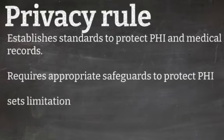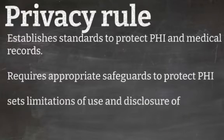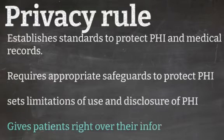The Privacy Rule sets limitations on the use and disclosure of PHI without patient authorization. It gives patients rights over their medical information, such as the right to obtain and examine their health records and to request corrections.